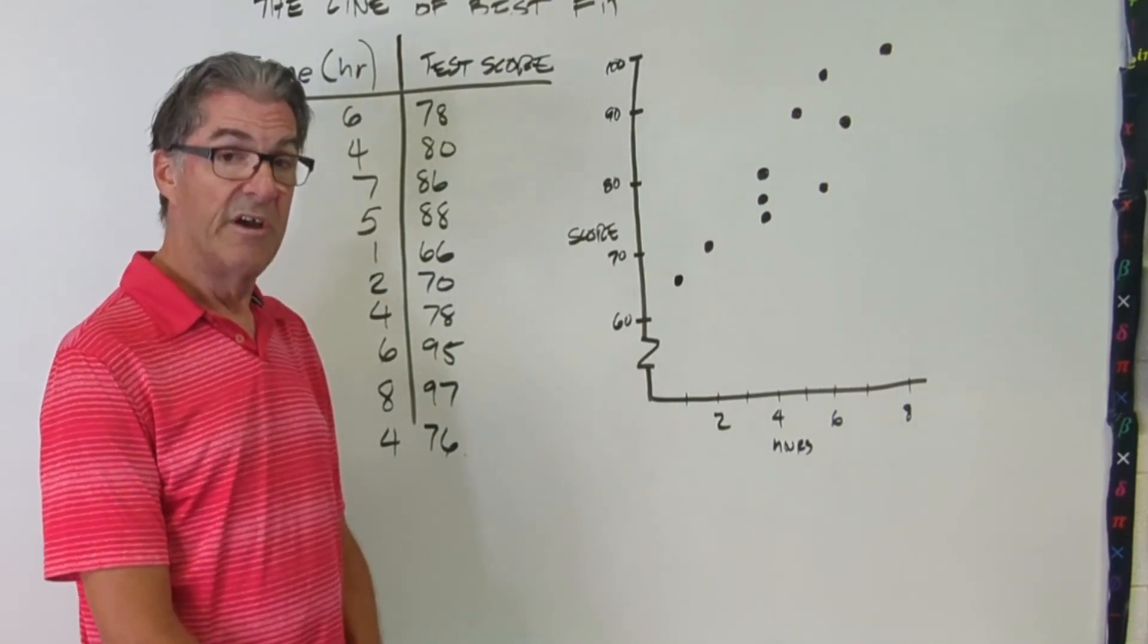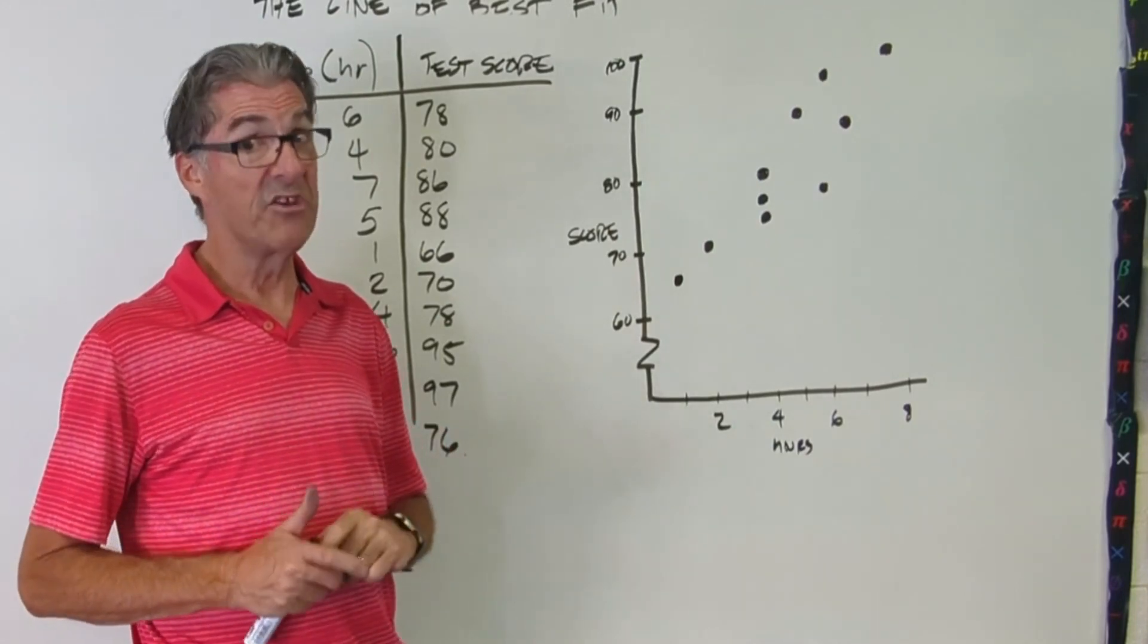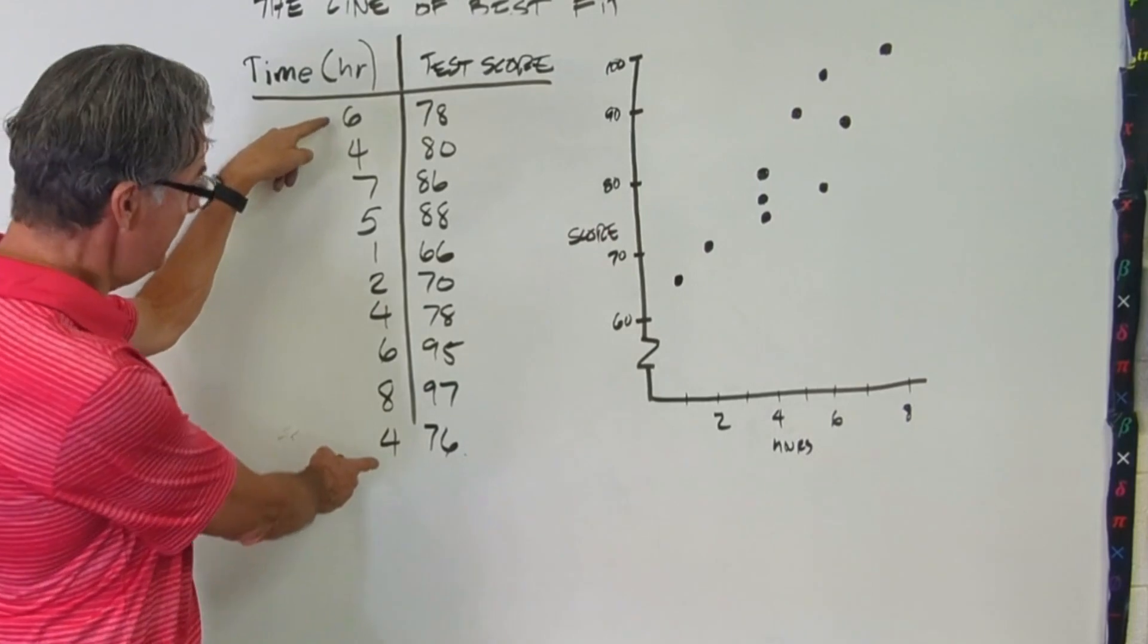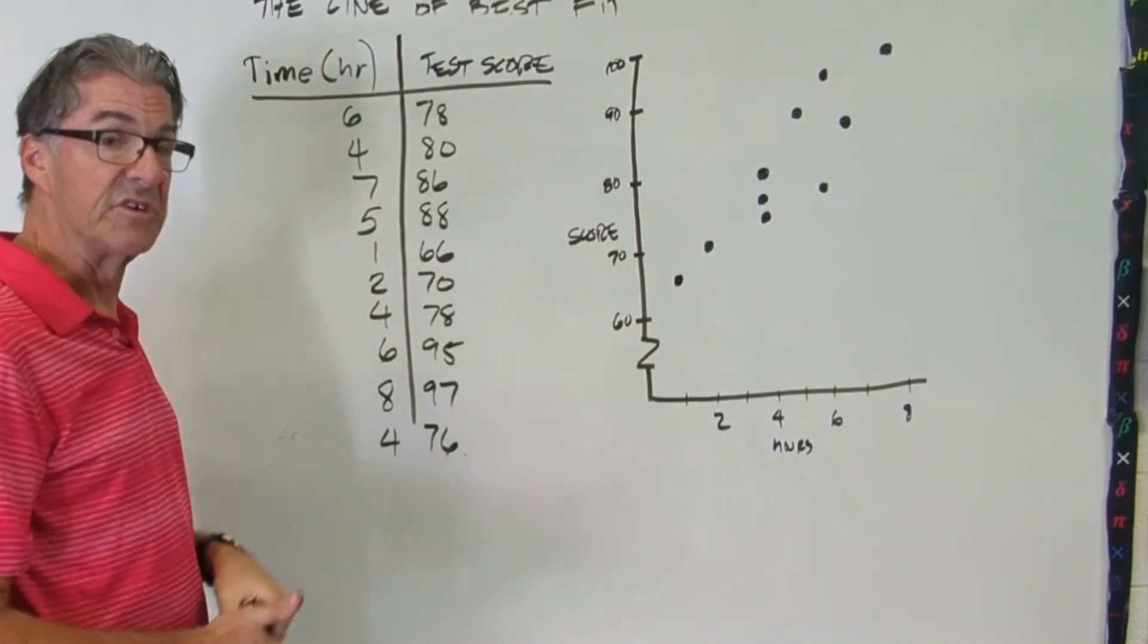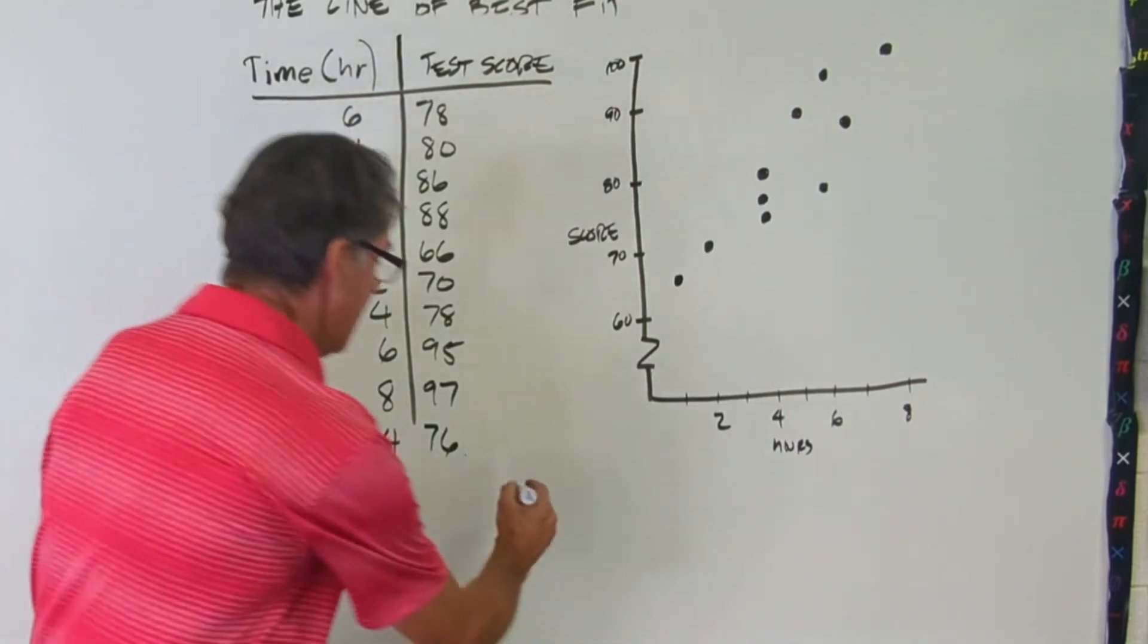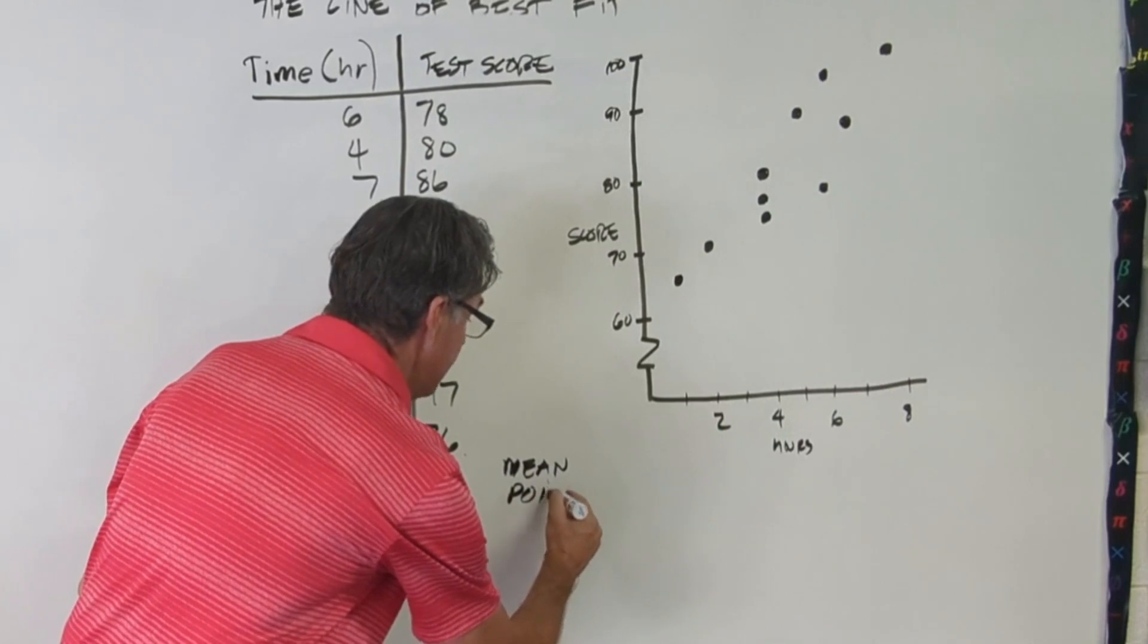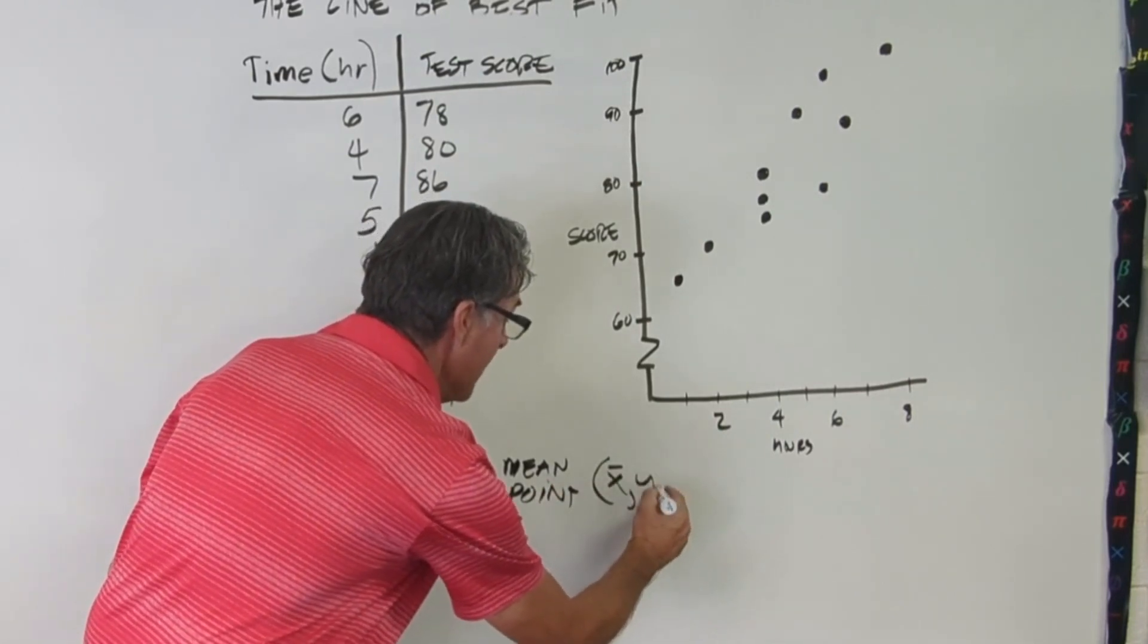So step two is finding the mean point. And I'm going to explain how to do that. And then I want you to do that calculation. The mean point is just the mean of the x values and the mean of the y values. So we have a notation for that. The mean point is written x bar over y bar.